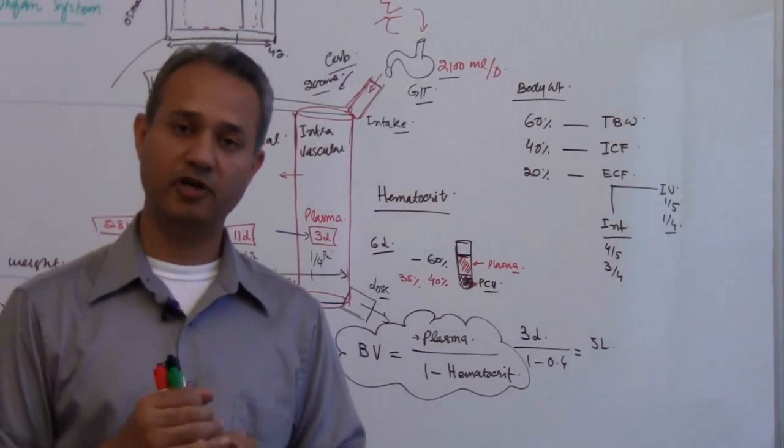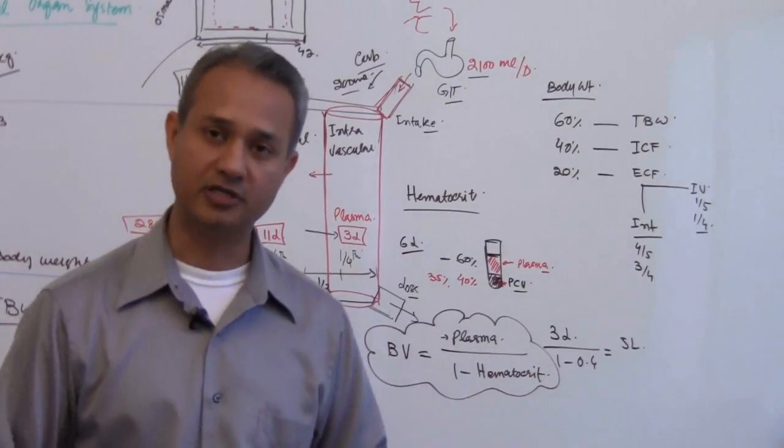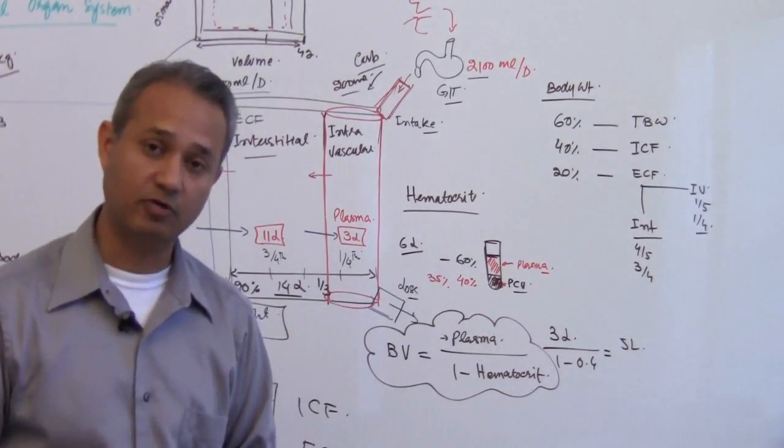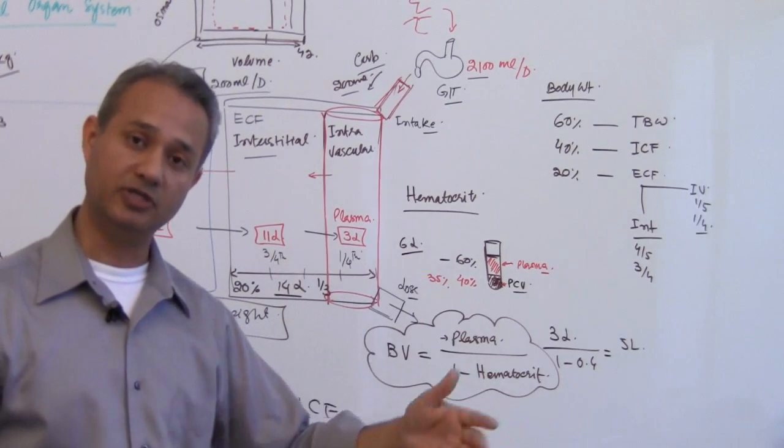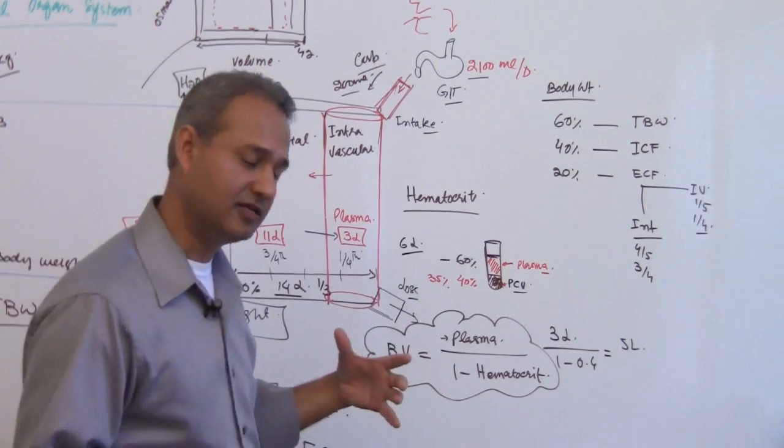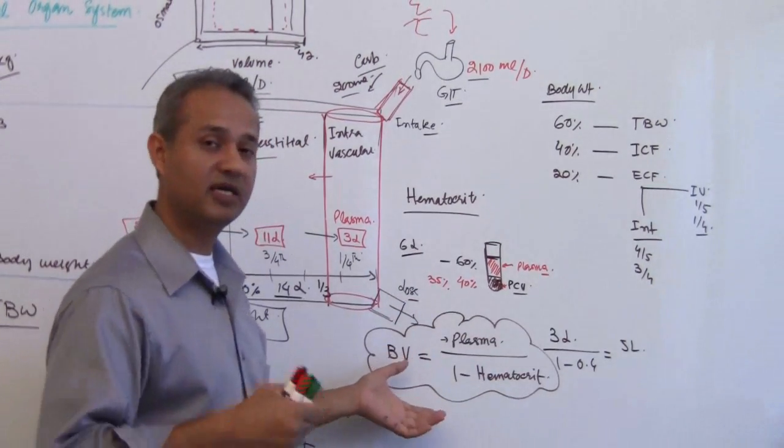If a person has a plasma volume of 4 liters, how much blood volume will he have? USMLE questions are going to hope that you know how to do this quickly. They would give you values which are easily calculatable, but you should be able to do this.